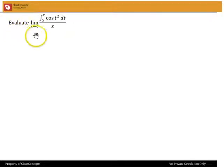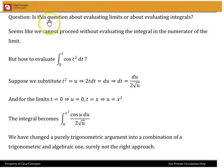We have to evaluate limit x tending to 0 of integral 0 to x cos t squared dt divided by x. So we have to ask ourselves a question: Is this a problem about evaluating limits or about evaluating integrals? Which is the more important one?